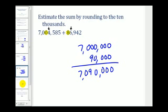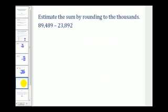Let's take a look at one more. Now we're back to estimating a difference, and here we'll round to the thousands. The nine is in the thousands, and the three is in the thousands. This four here tells us to round down, this eight here tells us to round up. So this will round to 89,000. This will round to 24,000.